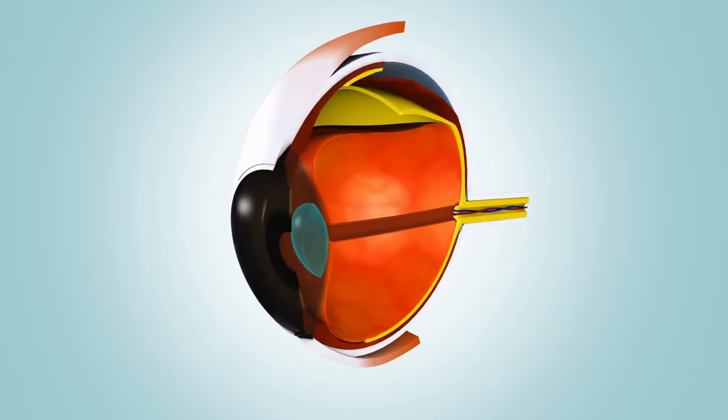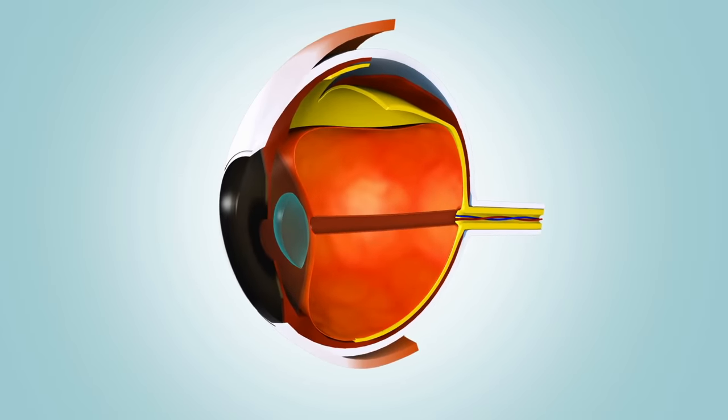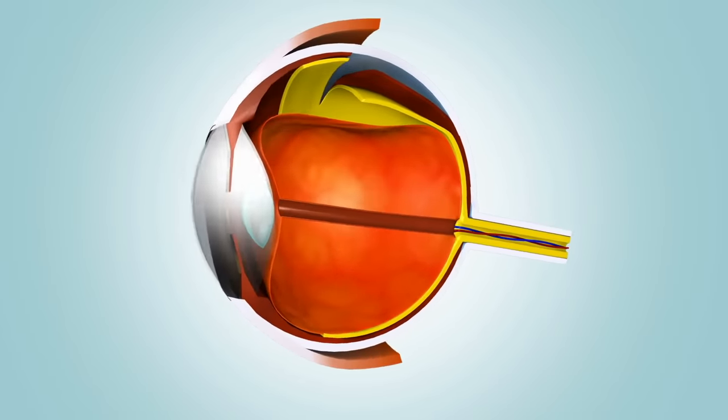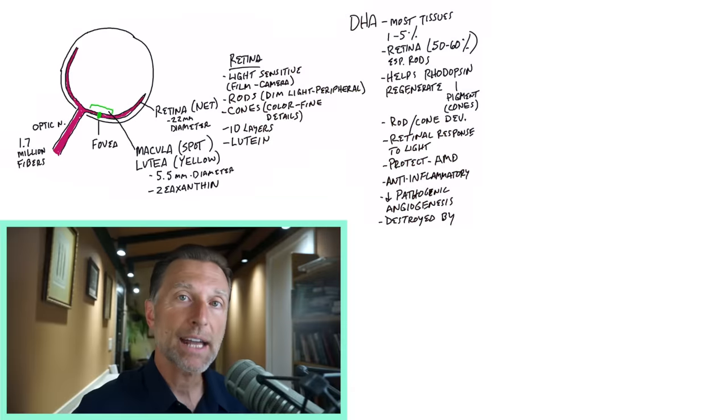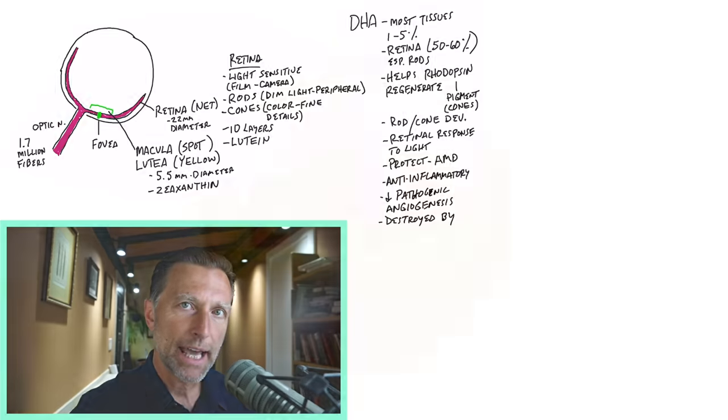The most important nutrient for the retina is something called DHA. That's an omega-3 fatty acid. There's also EPA as a part of that, but I'm going to focus more on the DHA.